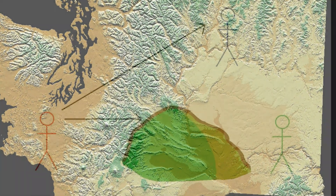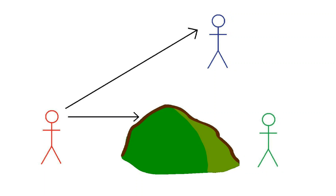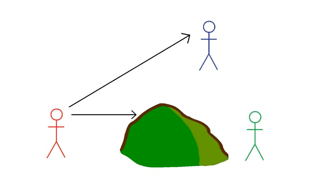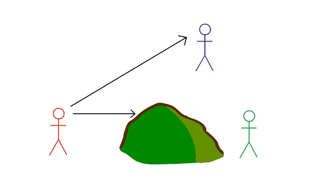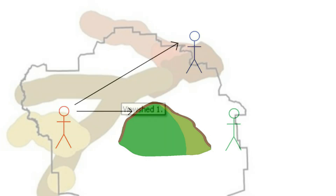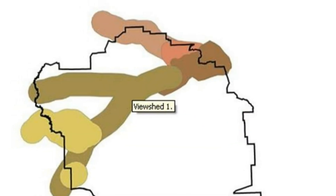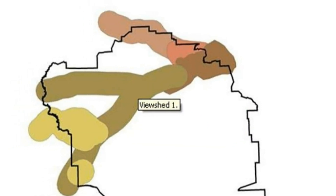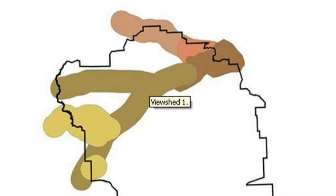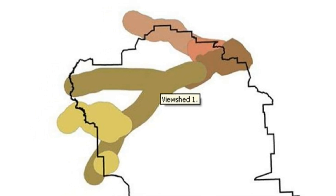Viewshed analysis can also be performed — this is the analysis of what is and is not visible from a particular point in the landscape. Such analysis allows us to understand the visual relationship between spaces, and therefore possible social significance.